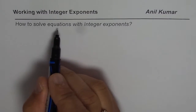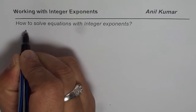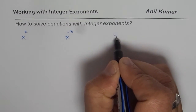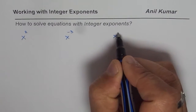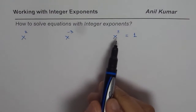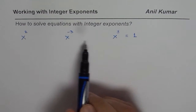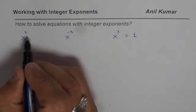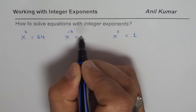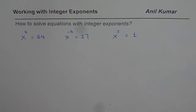Now the question is how to solve equations with integer exponents. When we say integer exponents, we are talking about x to the power of positive numbers, x to the power of negative numbers — all these are integers. It could be x to some unknown power that we need to find. So these are the types of equations we will solve, where the exponents are integers. Let us say we have x squared equals some number, and for a cubic equation let us take 27, and here we have x to the power of y equals 1.